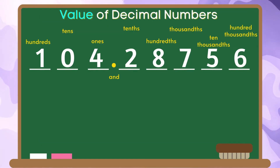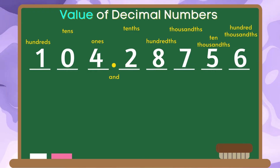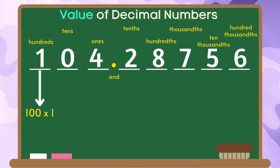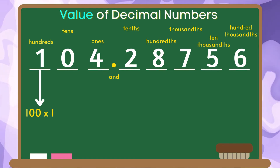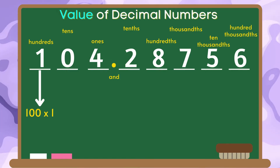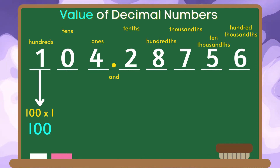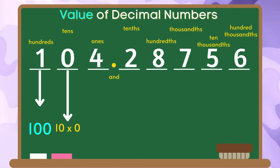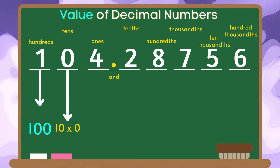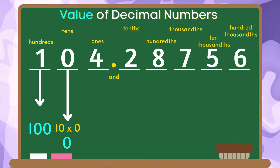Since we already understand the place value of each digit in a given decimal number, we are going to study the value of each digit. The place value of the digit one is hundreds. We are going to multiply one hundred by the digit one and the product is one hundred. The place value of the digit zero is tens. We are going to multiply zero by ten and the product is zero. The value of the digit zero is zero.